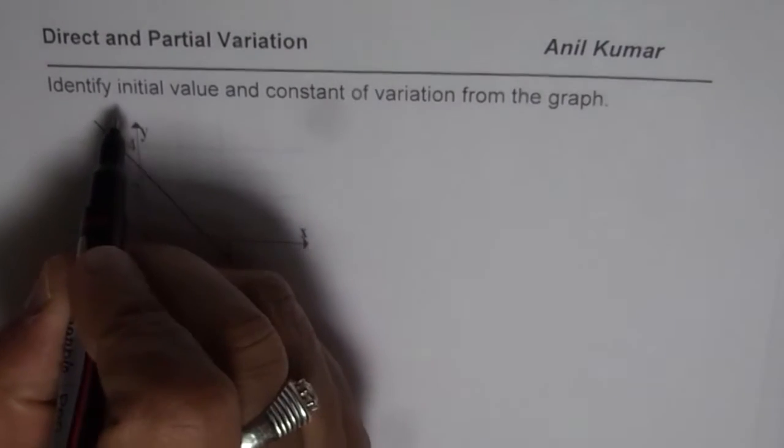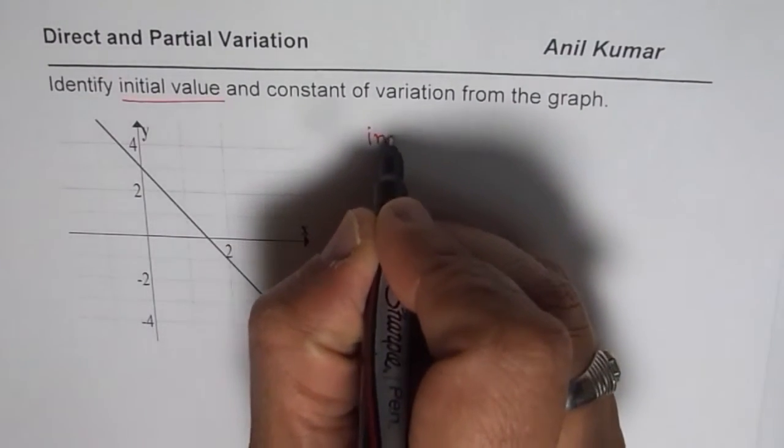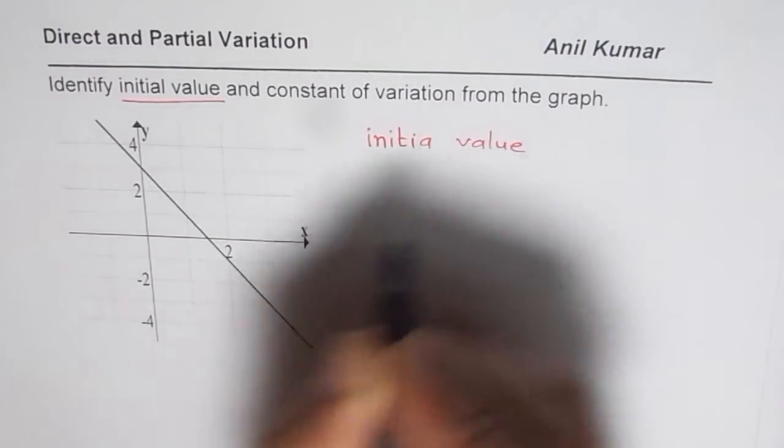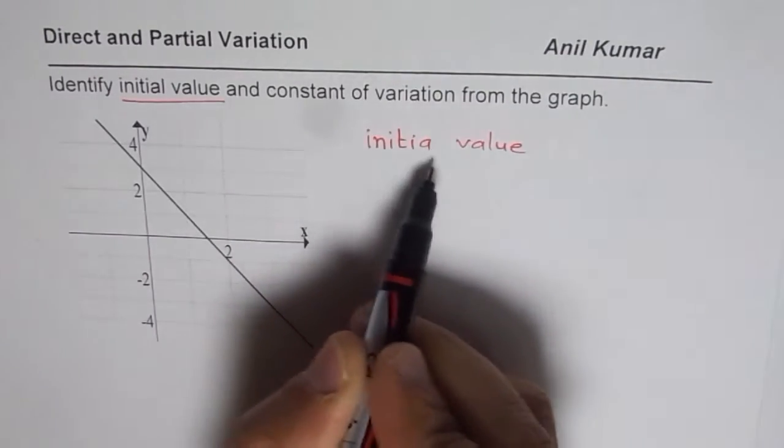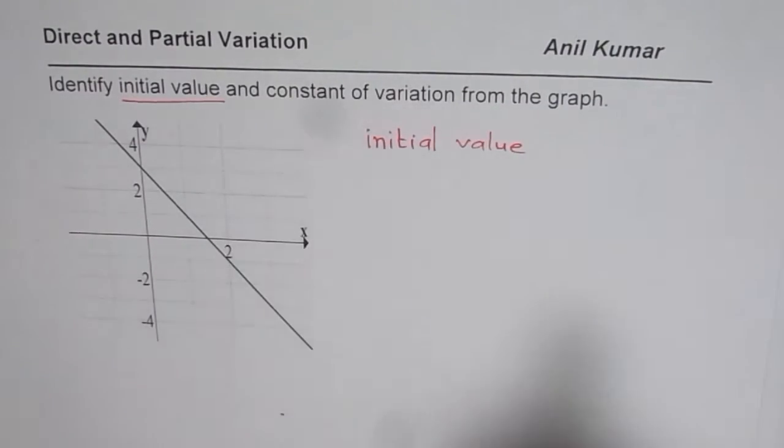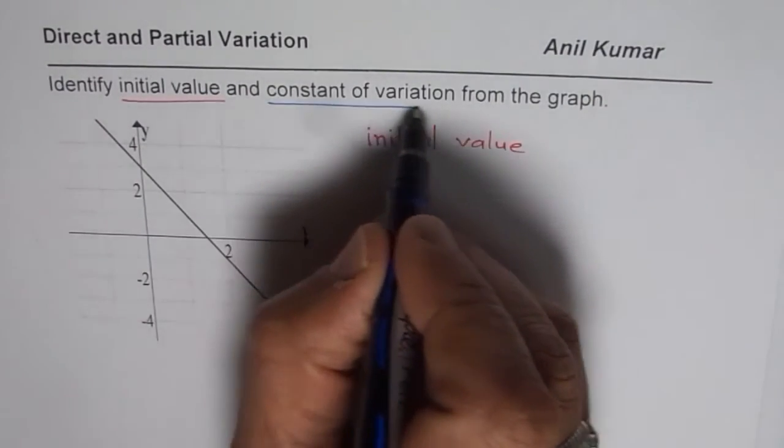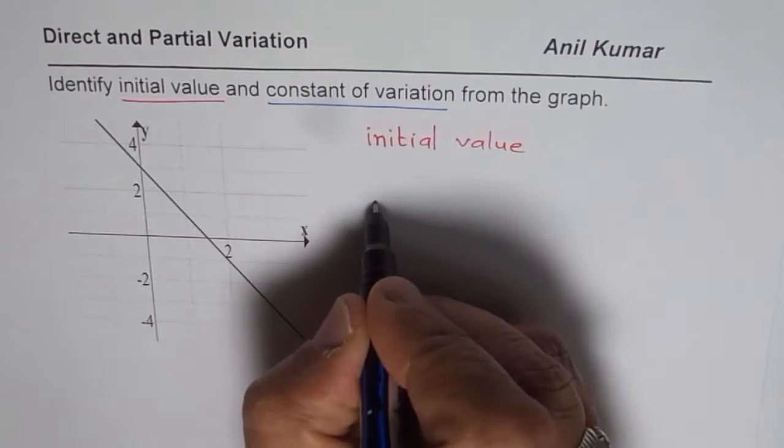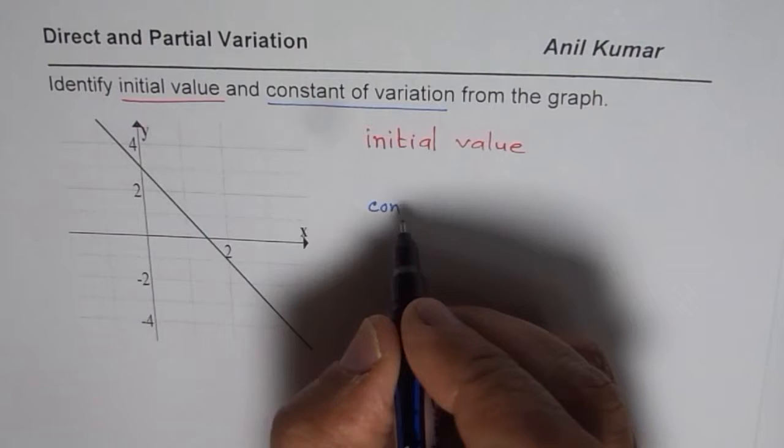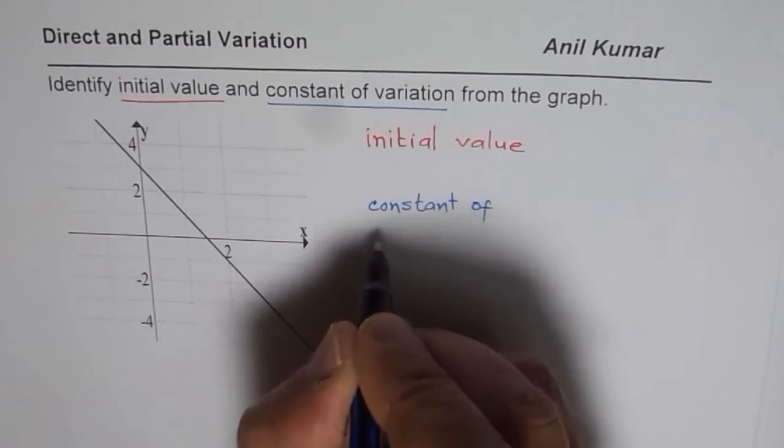We are using two terms here. First one is initial value. So what do you understand by initial value? And the second term which we have used is constant of variation. These are the two things which are very important to understand for this chapter on direct and partial variations.